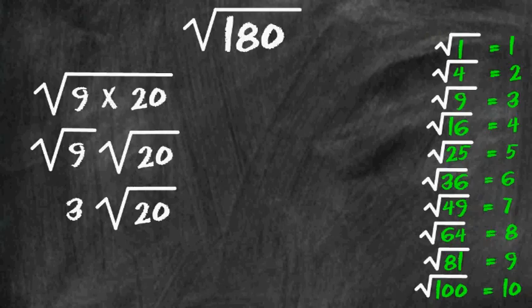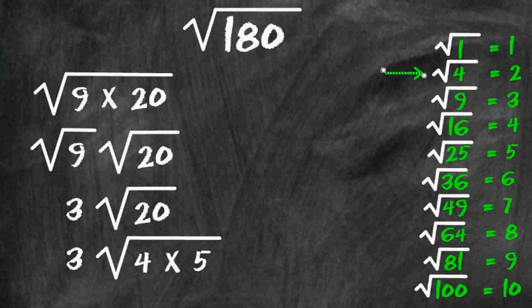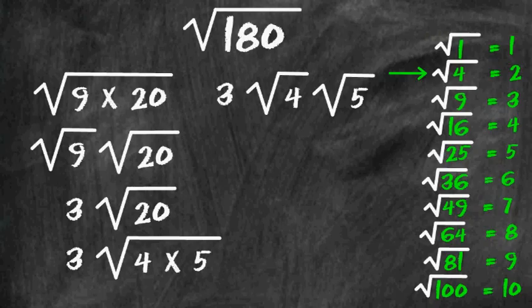Now before assuming that you have expressed your answer in simplest radical form, you have to check to make sure that the number underneath the radical sign does not contain any more perfect squares. 4 and 5 are two factors that will produce 20, and 4 is a factor that is a perfect square. So we are going to separate the square root of 4 from the square root of 5, because 4 is a perfect square and 5 is not.